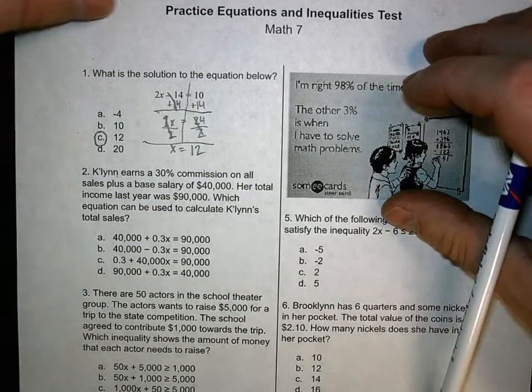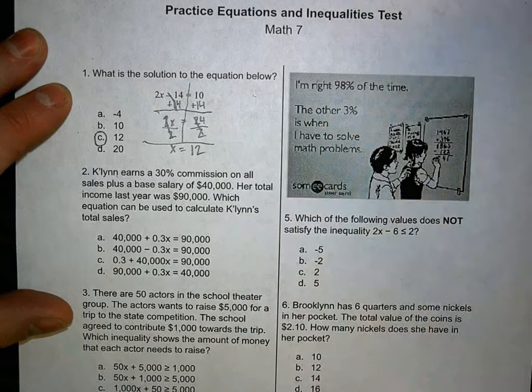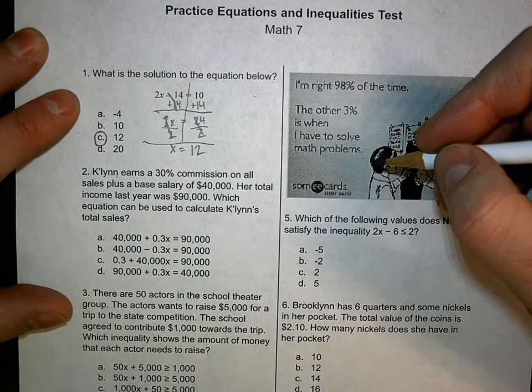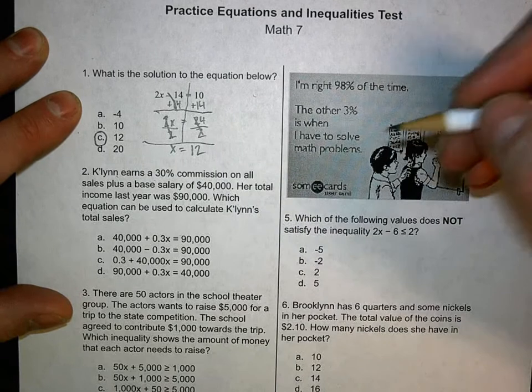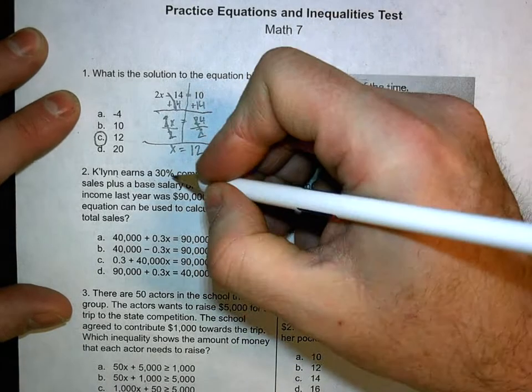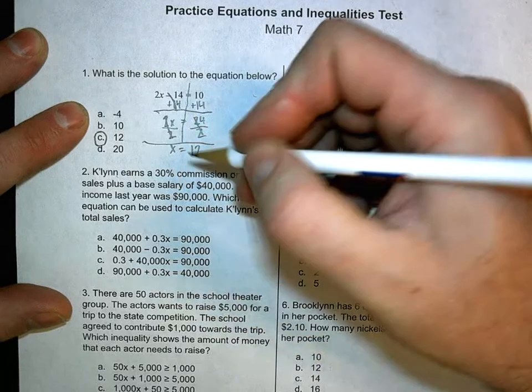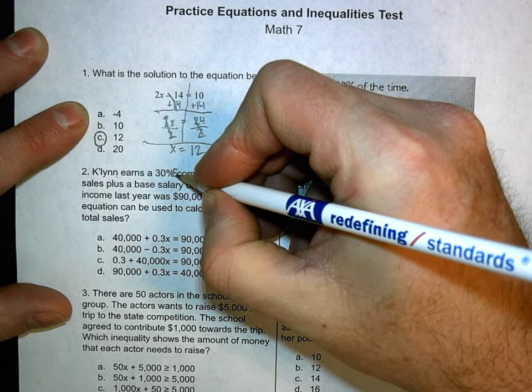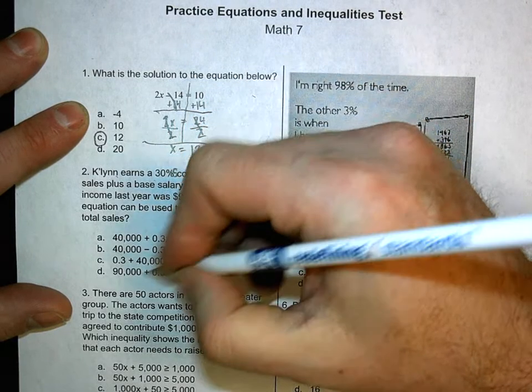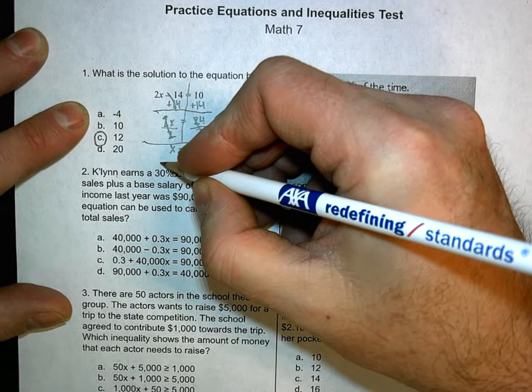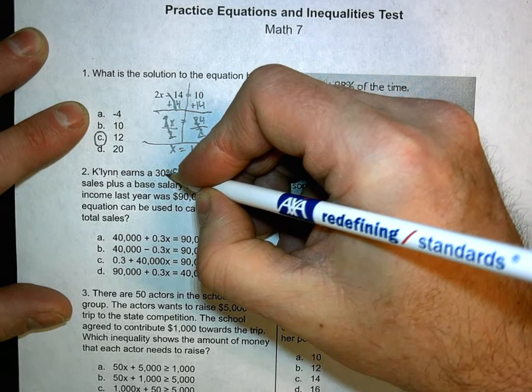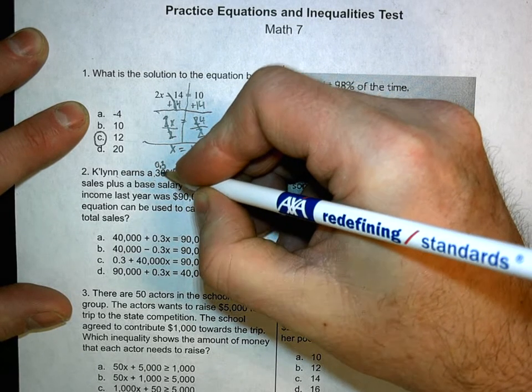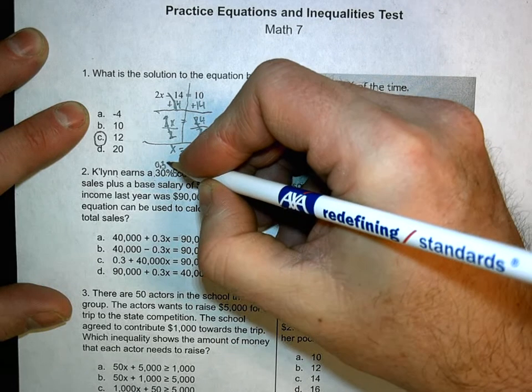All right, so number 2. Kaylin earns a 30% commission on all sales plus a base salary of $40,000. Her total income last year was $90,000. Which equation can be used to calculate Kaylin's total sales? So let's label the parts. So a 30% commission is 30% times sales, right? So 30% on all sales. We're going to make that an S. Because it's 30% times S or, because you can see down here it's already got 0.3. 30% in decimals. We move this decimal place. We've got two zeros here. So 1, 2. We end up with 0.3. We can drop the trailing zero because it means nothing.